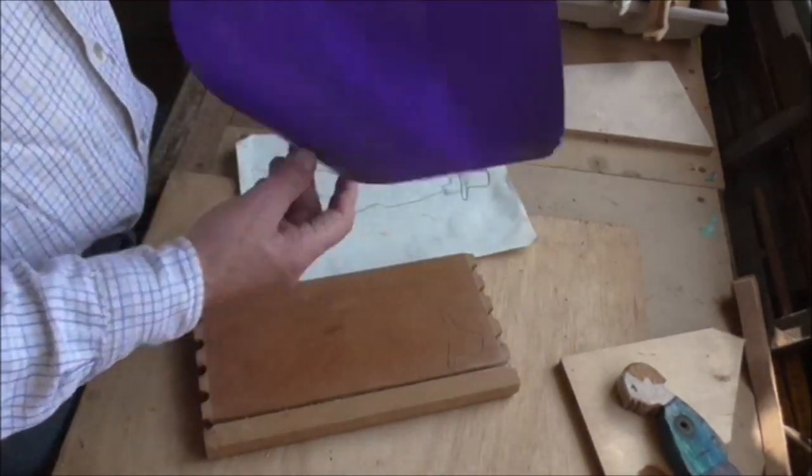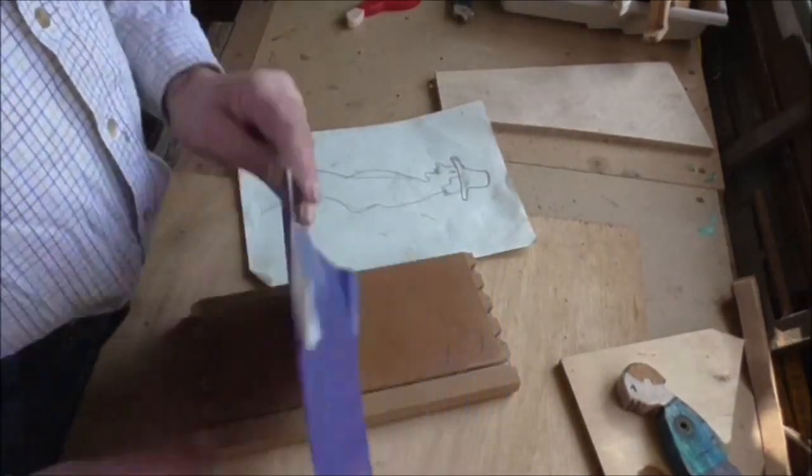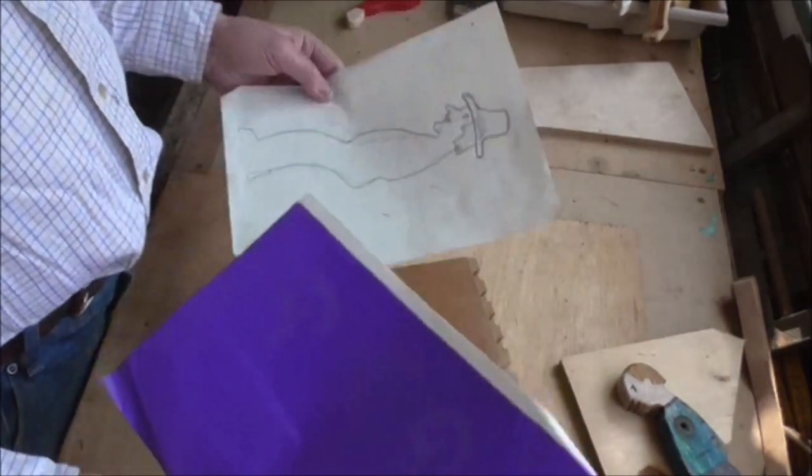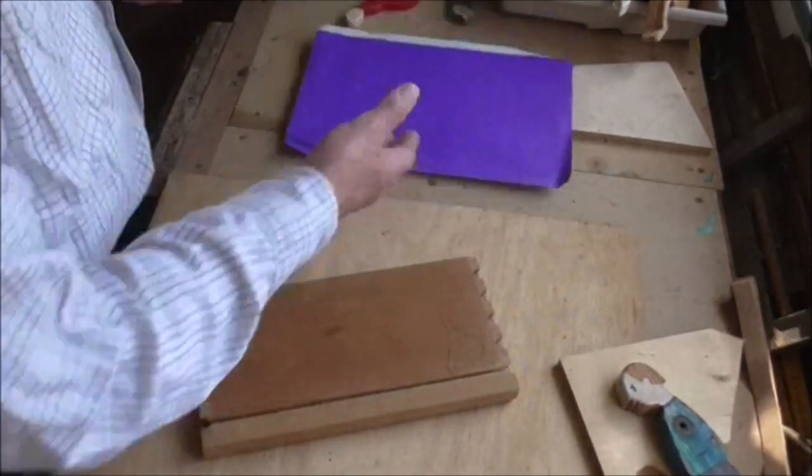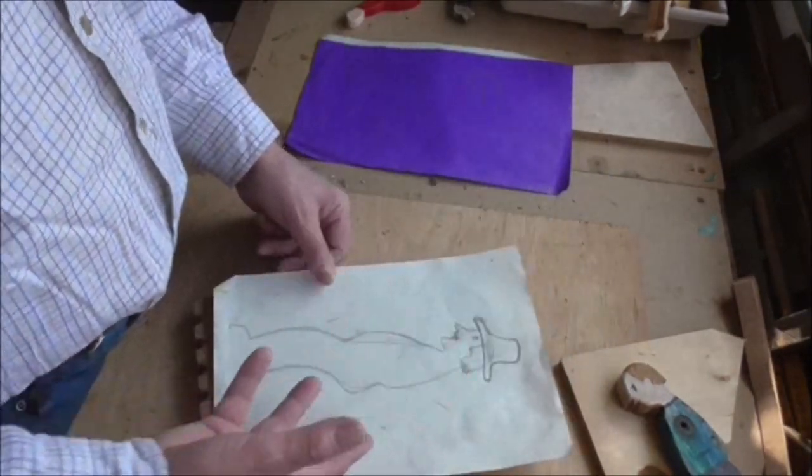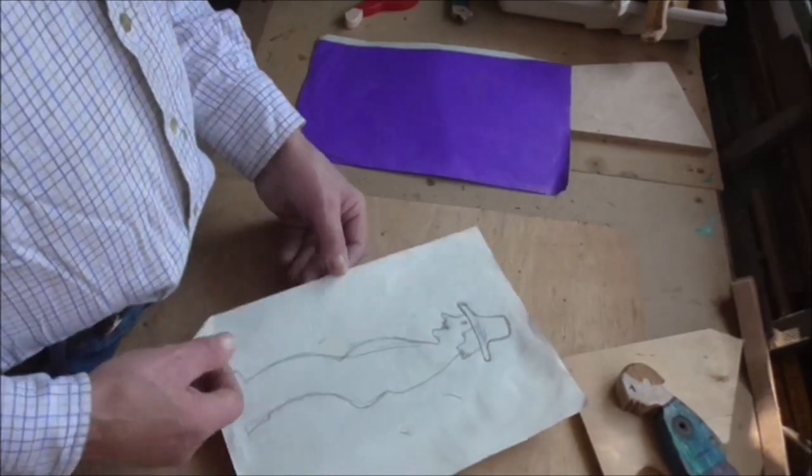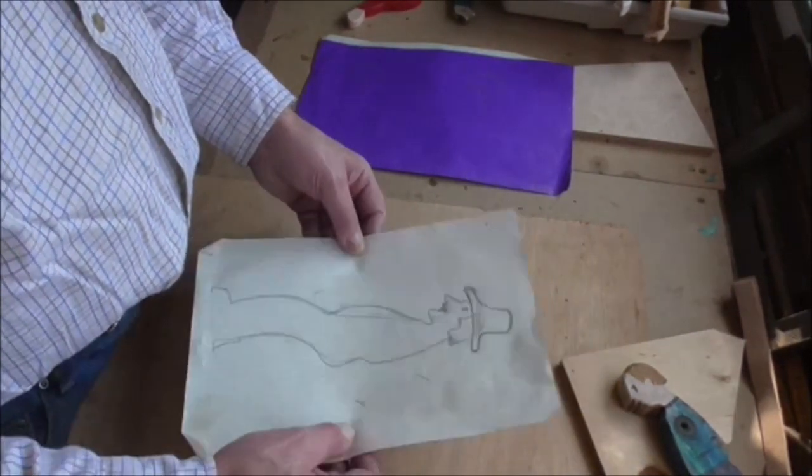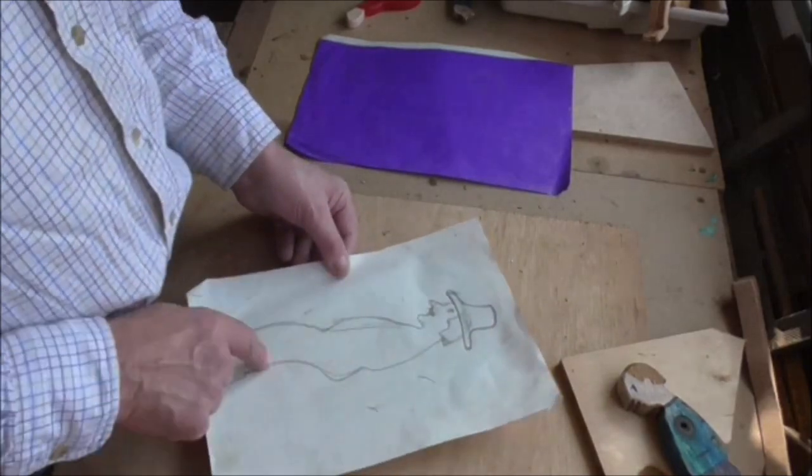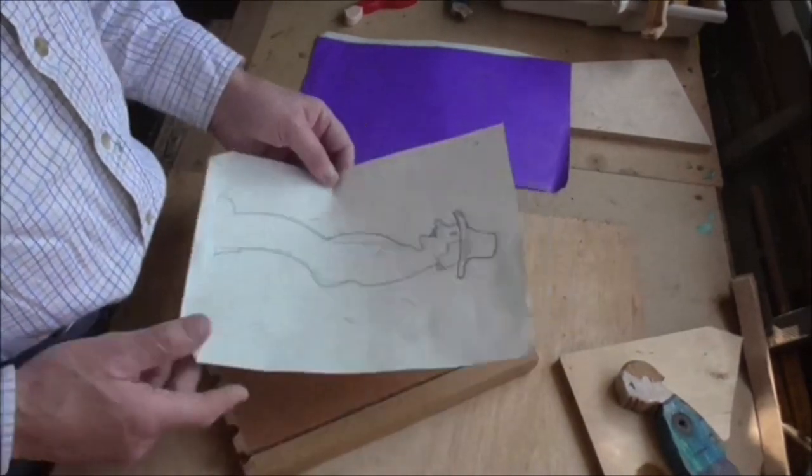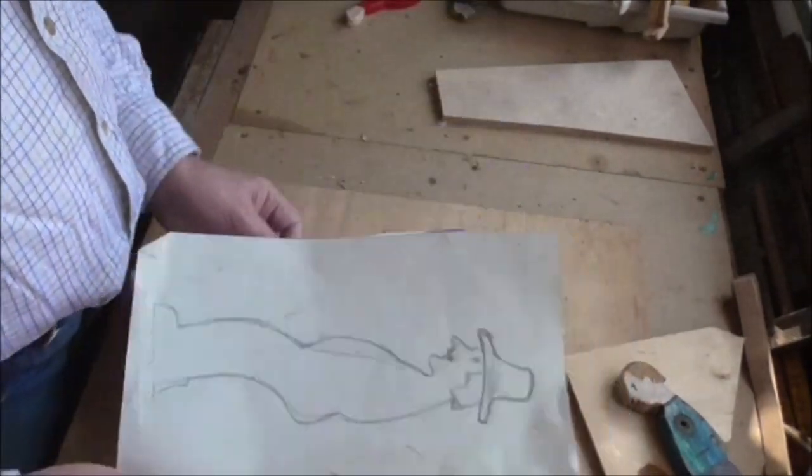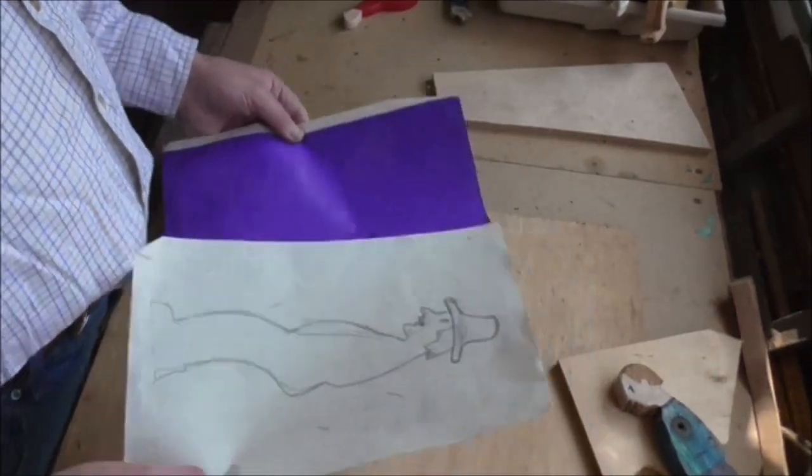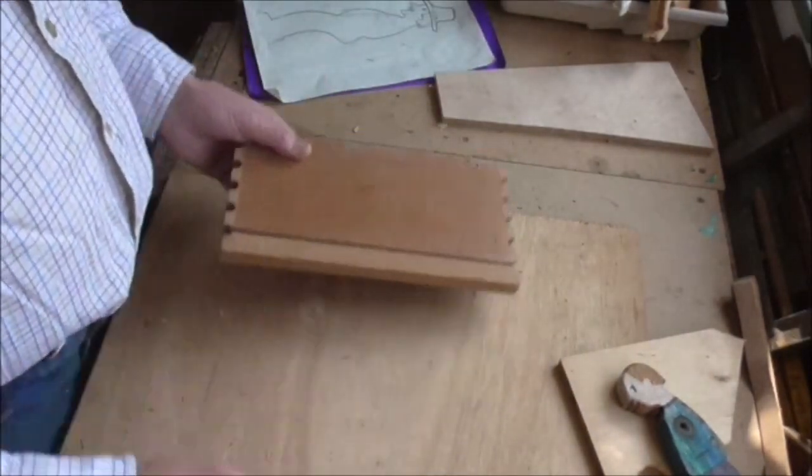This is what we always used to do with fretwork. Sadly today it's one of those things that people don't use. You would probably scan this - you could scan it into the computer, which is what I would normally do to be honest. I would scan it in and then I'd print a line drawing of that out and then I just glue it onto the wood and cut around it and then sacrifice the pattern each time. But in the old days we used a bit of carbon paper. That way you kept the pattern and you could use it again.